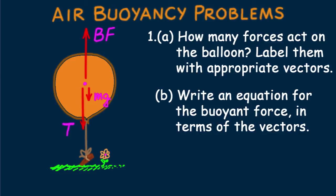Part B, write an equation for the buoyant force in terms of the vectors. And we see it's BF equals MG plus T.